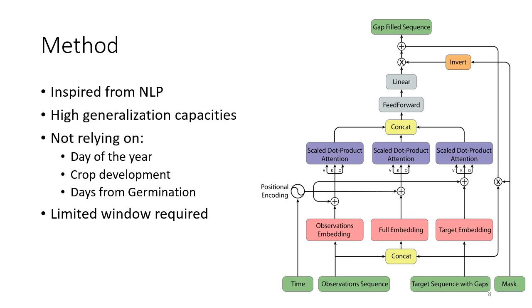In practice, we start with networks with a high generalization capability and we build an architecture that does not rely on either the day of the year, on the crop development or even on the time since germination. One challenge is that we intend to train this network with a limited amount of data before and after the gaps.